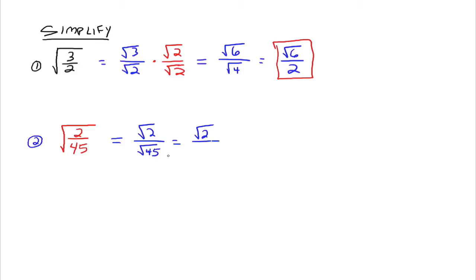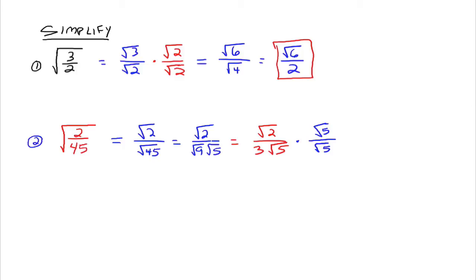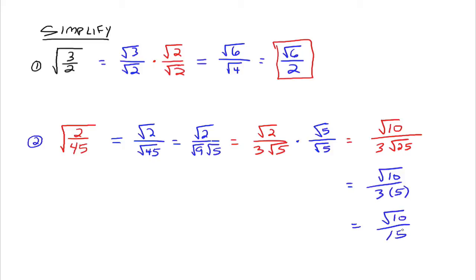The square root of 2 is just the square root of 2, but the square root of 45 we could rewrite as the square root of 9 times the square root of 5. So we have the square root of 2 over 3 times the square root of 5. We still have a square root in the denominator, so we need to multiply the top and bottom by something to rationalize the denominator. Since it's the square root of 5, we can just multiply the top and bottom by the square root of 5. The numerator is going to be the square root of 10, and the denominator is going to be 3 times the square root of 25. The square root of 5 times the square root of 5 is the square root of 25, so we have the square root of 10 over 3 times 5, which is the square root of 10 over 15.